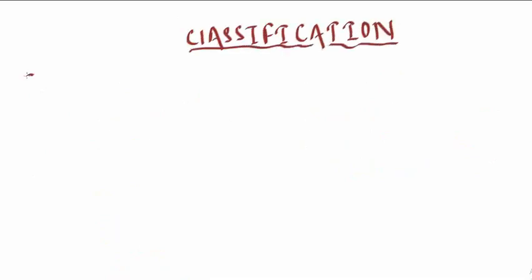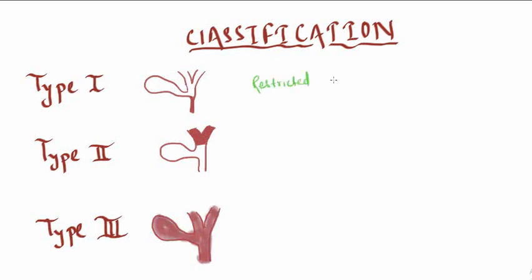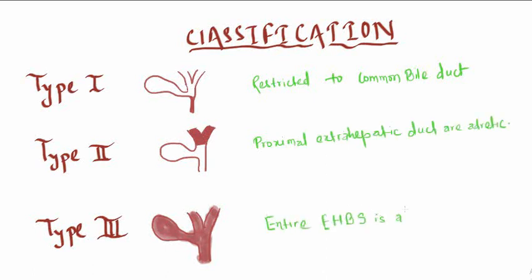Classification into Type 1, Type 2, and Type 3. Type 1: the common bile duct is atretic or stenosed, restricted to common bile duct. Type 2: the right and left hepatic ducts and common hepatic duct are atretic; proximal extrahepatic ducts are atretic. Type 3: all the extrahepatic biliary apparatus is atretic; the entire extrahepatic biliary system is atretic.